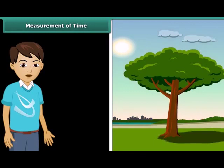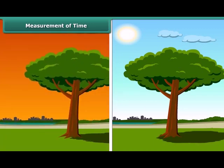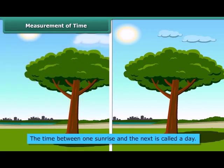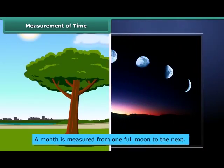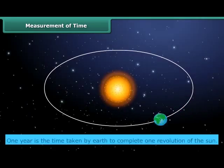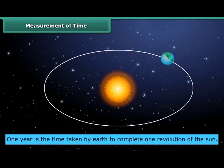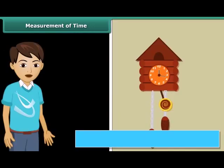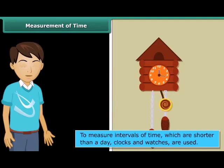Have you ever wondered how our elders could tell the approximate time of the day by just looking at the shadows? Many events in nature repeat themselves after definite intervals of time. For example, sun rises every day in the morning. The time between one sunrise and the next is called a day. Similarly, a month is measured from one full moon to the next. One year is the time taken by earth to complete one revolution of the sun. To measure intervals of time which are shorter than a day, we use clocks and watches.